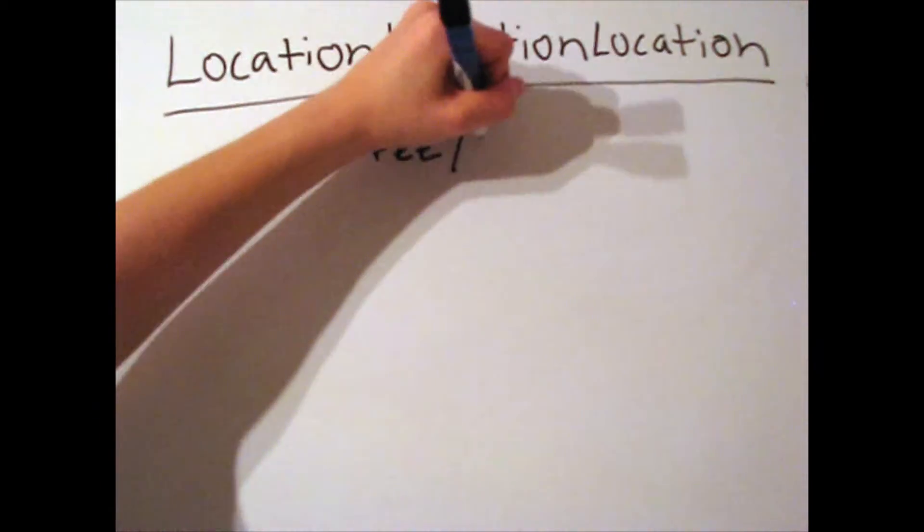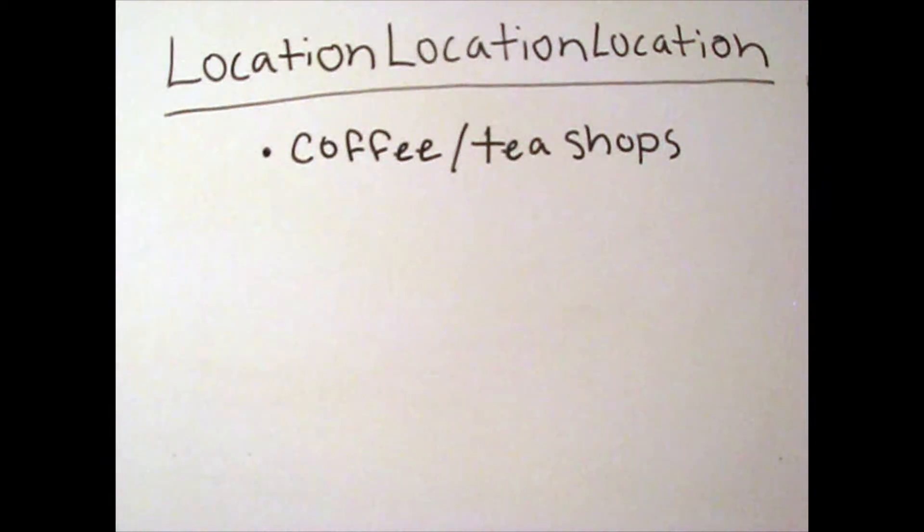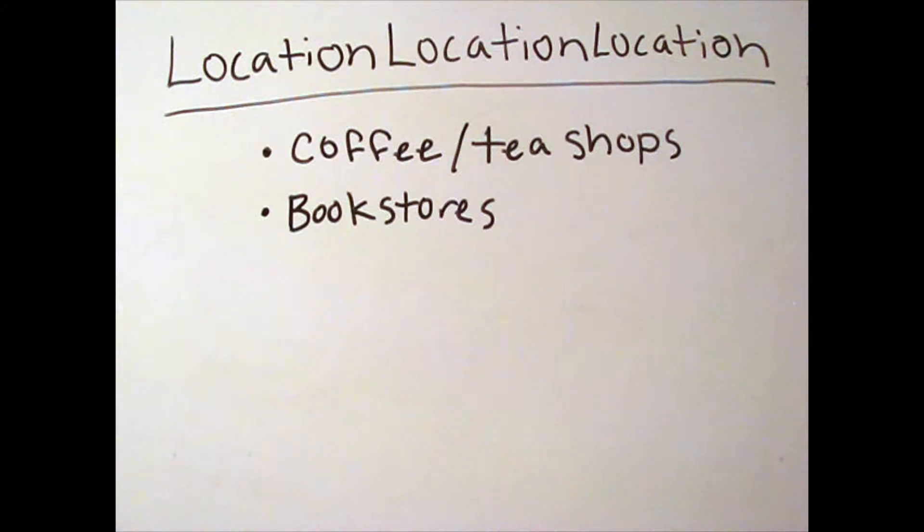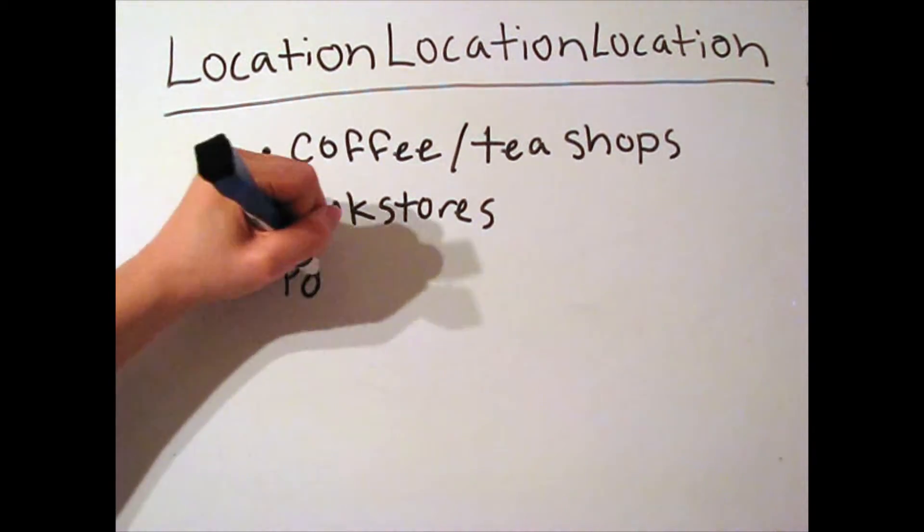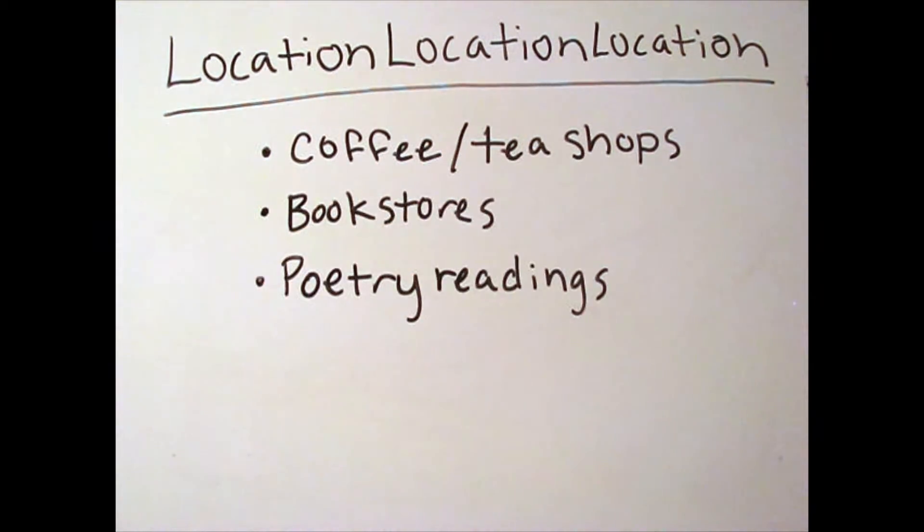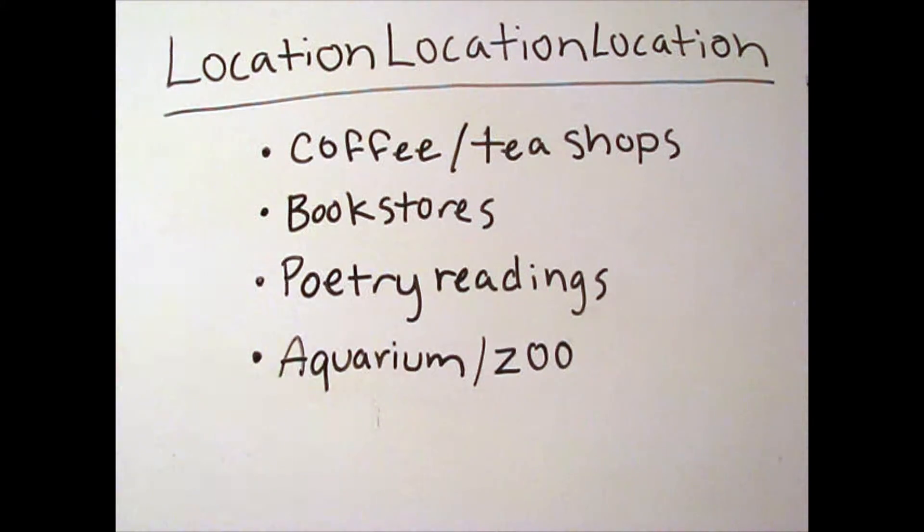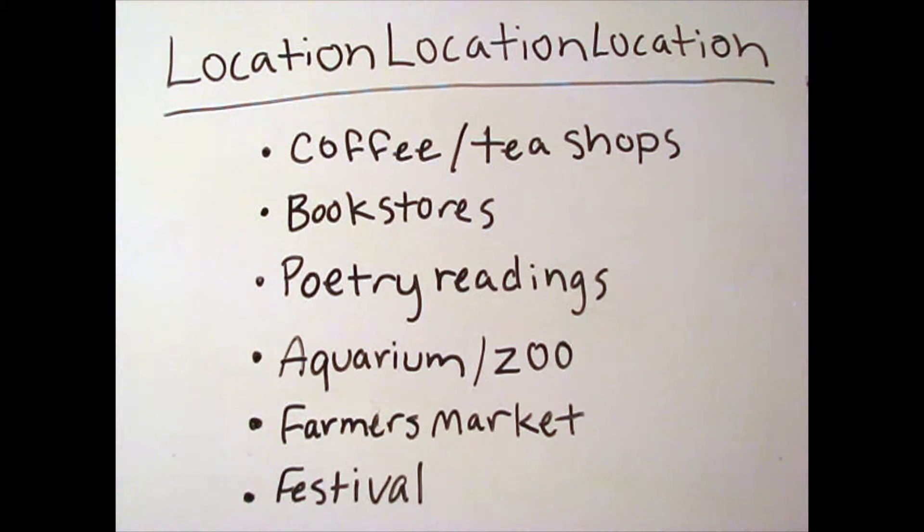So where can you find some fellow hipsters that share your interests and life pursuits? Hipsters live on coffee and tea, so find a shop where they can drink their lifeblood. Bookstores are an intellectual hipster breeding ground. Poetry readings are perfect for the super hip and creative. Also look in ironic settings like the aquarium or zoo. Saturday Farmer's Markets are where you will find the organic vegetarians and any sort of festival for art or music is sure to be riddled with hipsters.